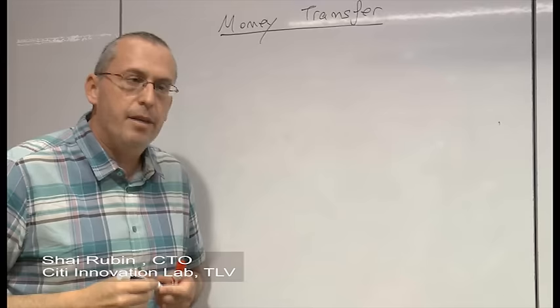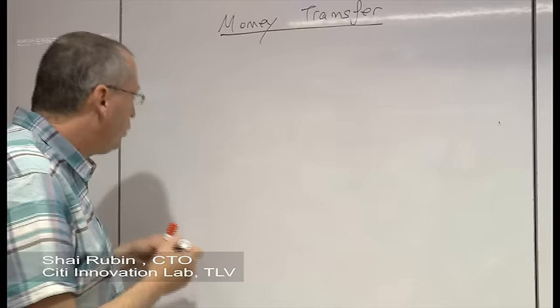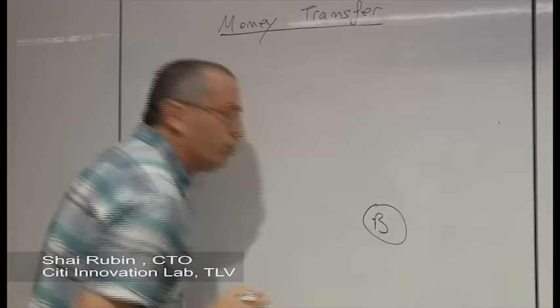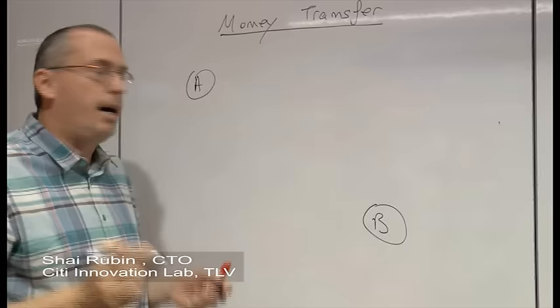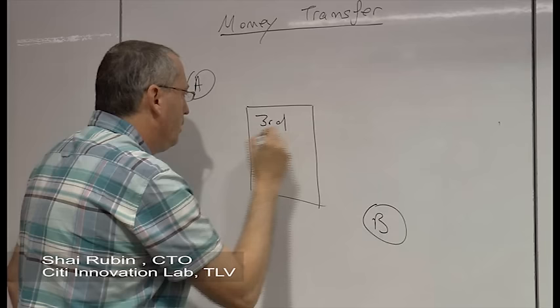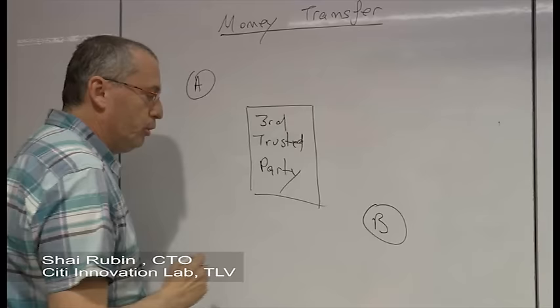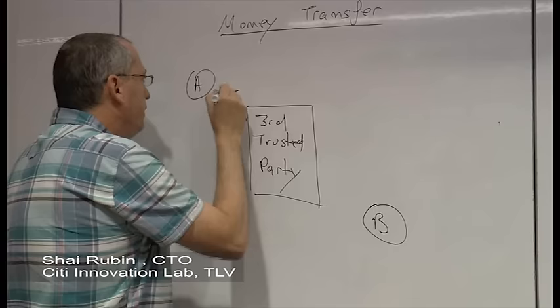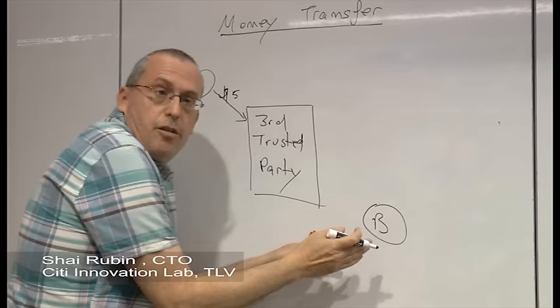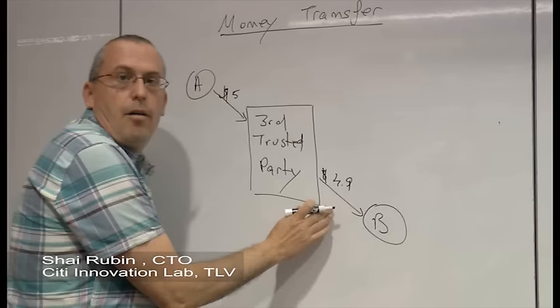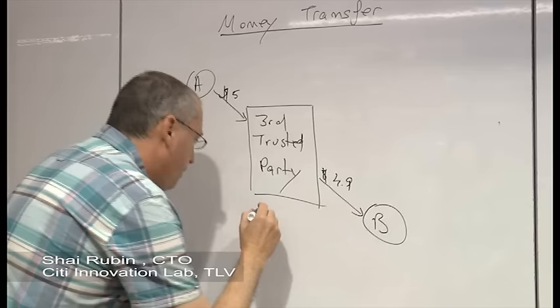So today, if a person A wants to move money or transfer money to a person B, let's say from Israel to Japan, this is typically done using a third trusted party. And it typically works as follows. First of all, A says I want to transfer to B and orders the third party to transfer money to B. The trusted party, because it is trusted, identifies B in Japan, identifies the person and the bank account, and then moves the money after taking some fee to the right account in Japan. This typically takes about three days or more.